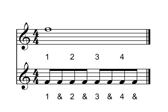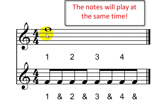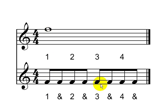Now, to understand the relationship between the 8th notes and the other note durations, let's try to compare. You will hear in this example these 8th notes and this whole note play simultaneously, and you will notice that it takes the same time for this whole note to play as it takes these 8th notes to play. This is good to understand the relationship between different note durations. Let's take a listen. You get the idea? Let's listen one more time.